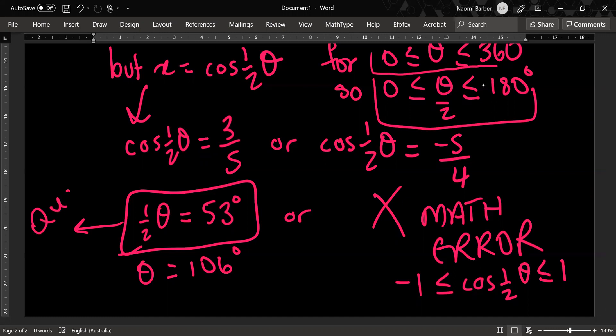So I'm only considering quadrant 1 where cos is positive in this case. So quadrant 1, not quadrant 4. So that's why I only get one answer.